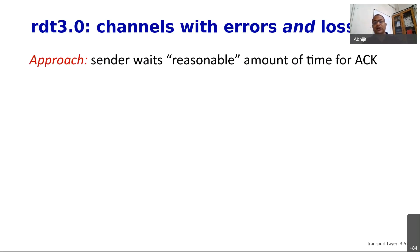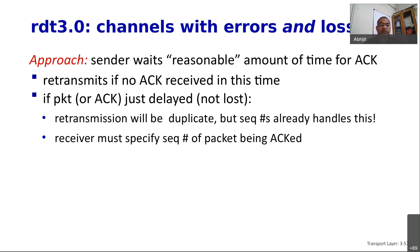With RDT 3.0 we introduced the problem of loss — a packet transmitted by the sender can be lost in the network. Our approach is that the sender will wait for some reasonable amount of time for the acknowledgement to come back. There is no way for the sender to know whether the packet was delayed, dropped by the router, or whether the acknowledgement did not come. The only solution is that the sender waits a reasonable amount of time and then retransmits.